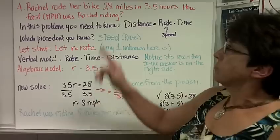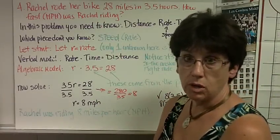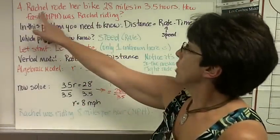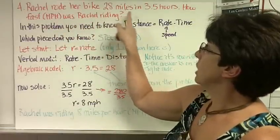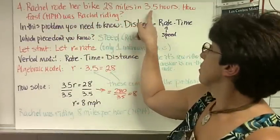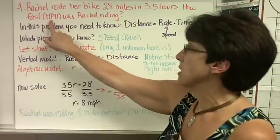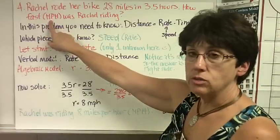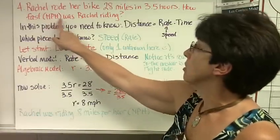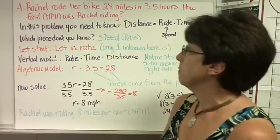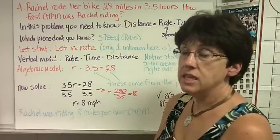Here's another type of problem. These are distance problems. Rachel rode her bike 28 miles in 3.5 hours. How fast in miles per hour, that's what MPH stands for, miles per hour, was Rachel riding?